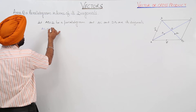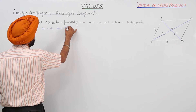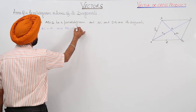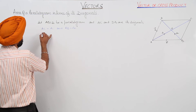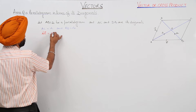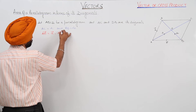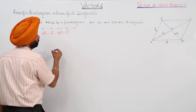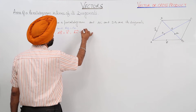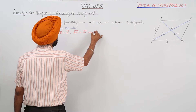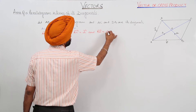AC is equal to D1 and BD is equal to D2. Vector AB represents vector a, vector AD represents vector b, vector AC represents vector D1, and vector BD represents vector D2.